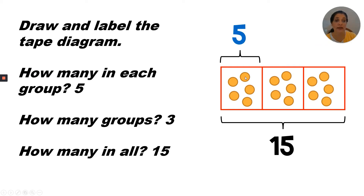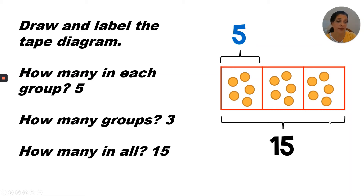If we go ahead and put an equal number in each box, we can say that there are five, ten, fifteen in all. And now we can label the bottom number. This bracket stretches across the bar diagram — five, ten, fifteen — so our label is fifteen.